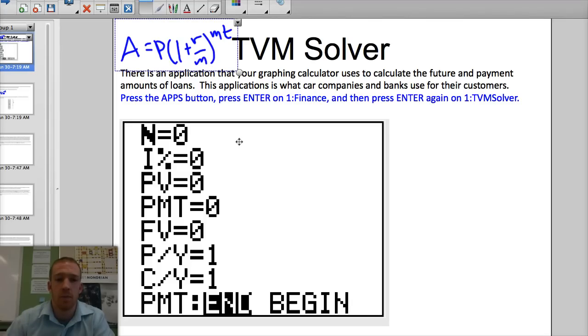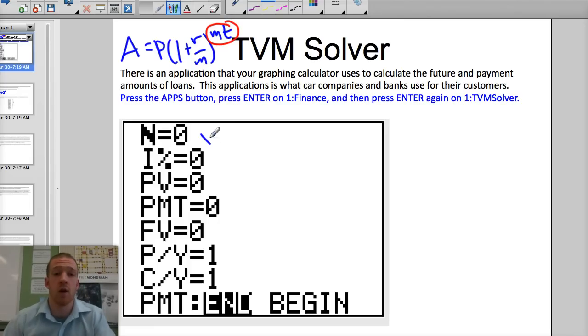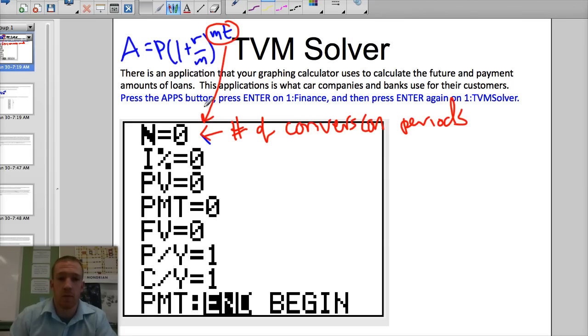So what we're going to do, first explain: the N is the number of conversion periods. So if it was compounded every month for 10 years, that'd be 12 months times 10 years, that's actually 120 compoundings. So this is the number of conversion periods. Then, it's important that you remember that it's times per year times number of years.